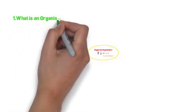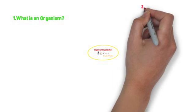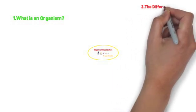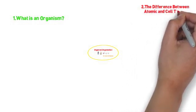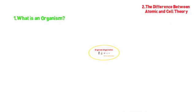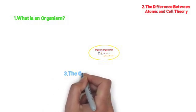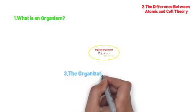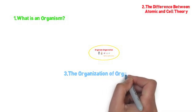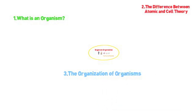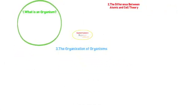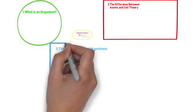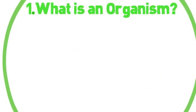So this video is going to discuss three things. Number one, what is an organism? Number two, the difference between atomic and cellular theory. Number three, the organization of organisms. And we are going over one and two because it will help you understand the third concept. Without that background knowledge, the third one doesn't make complete sense.